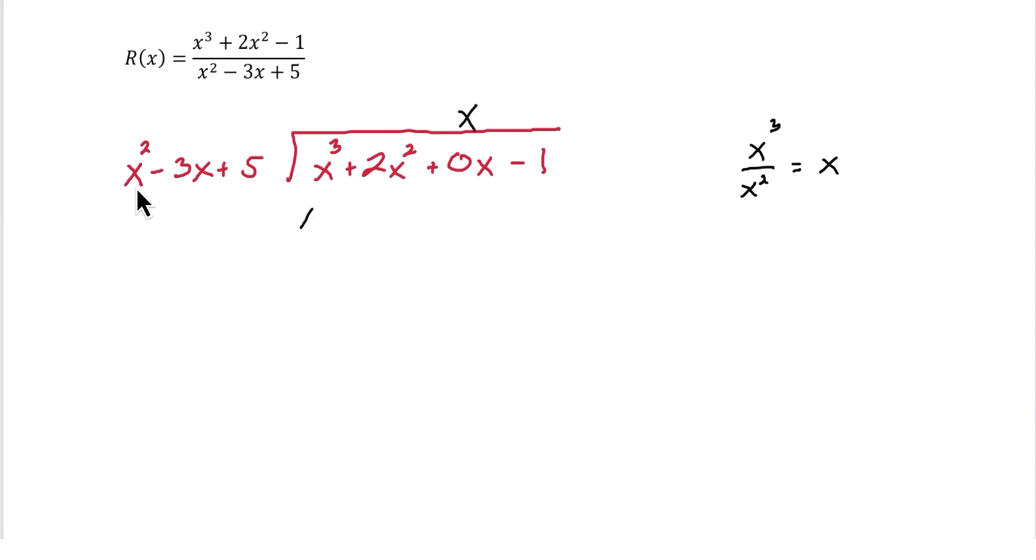x times x squared is x cubed. x times negative 3x is negative 3x squared. x times 5 is 5x. Then we subtract that quantity. The first terms go away. Then we have 2 minus negative 3. That's 2 plus 3. That will give us 5x squared. Then we have 0 minus 5. That is minus 5x. Then we drop down to negative 1.